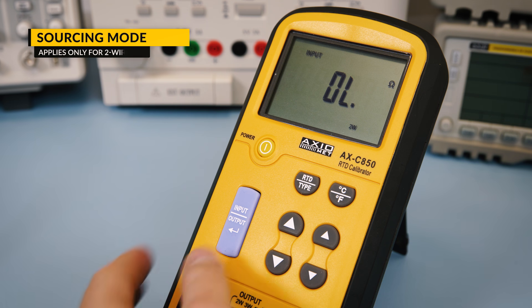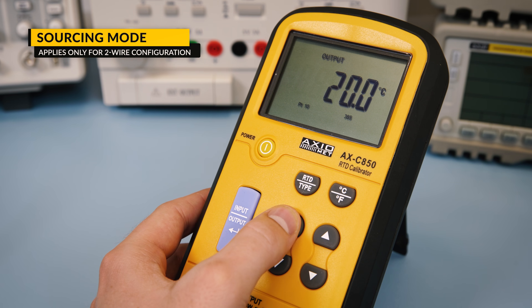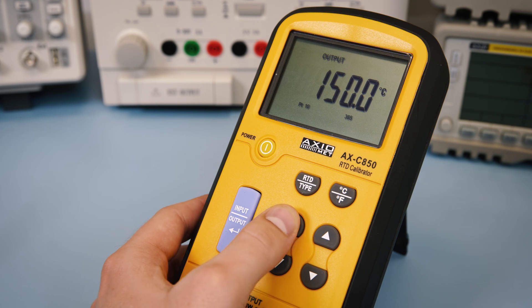For sourcing, switch to output mode by pressing the input-output button. Then select the RTD type and use the arrow keys to select the desired temperature.